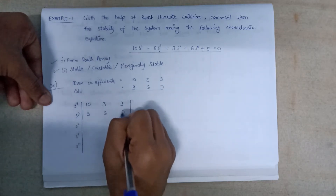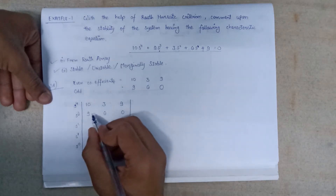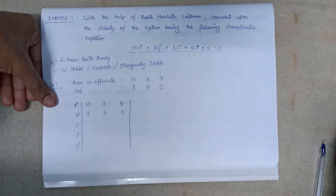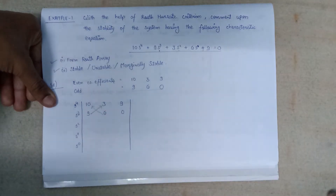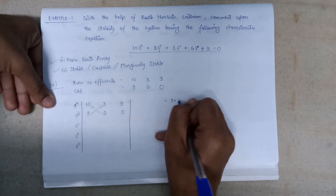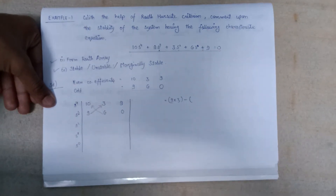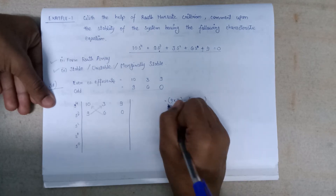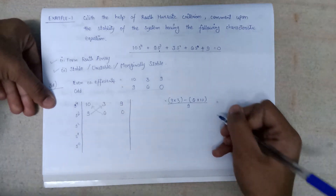We have to do the cross multiplication as we did in the earlier lecture. The cross multiplication will be performed bottom to top. First, 9 will be multiplied with 3, then 6 will be multiplied with 10. The whole term will be divided by the bottom element, which is 9.